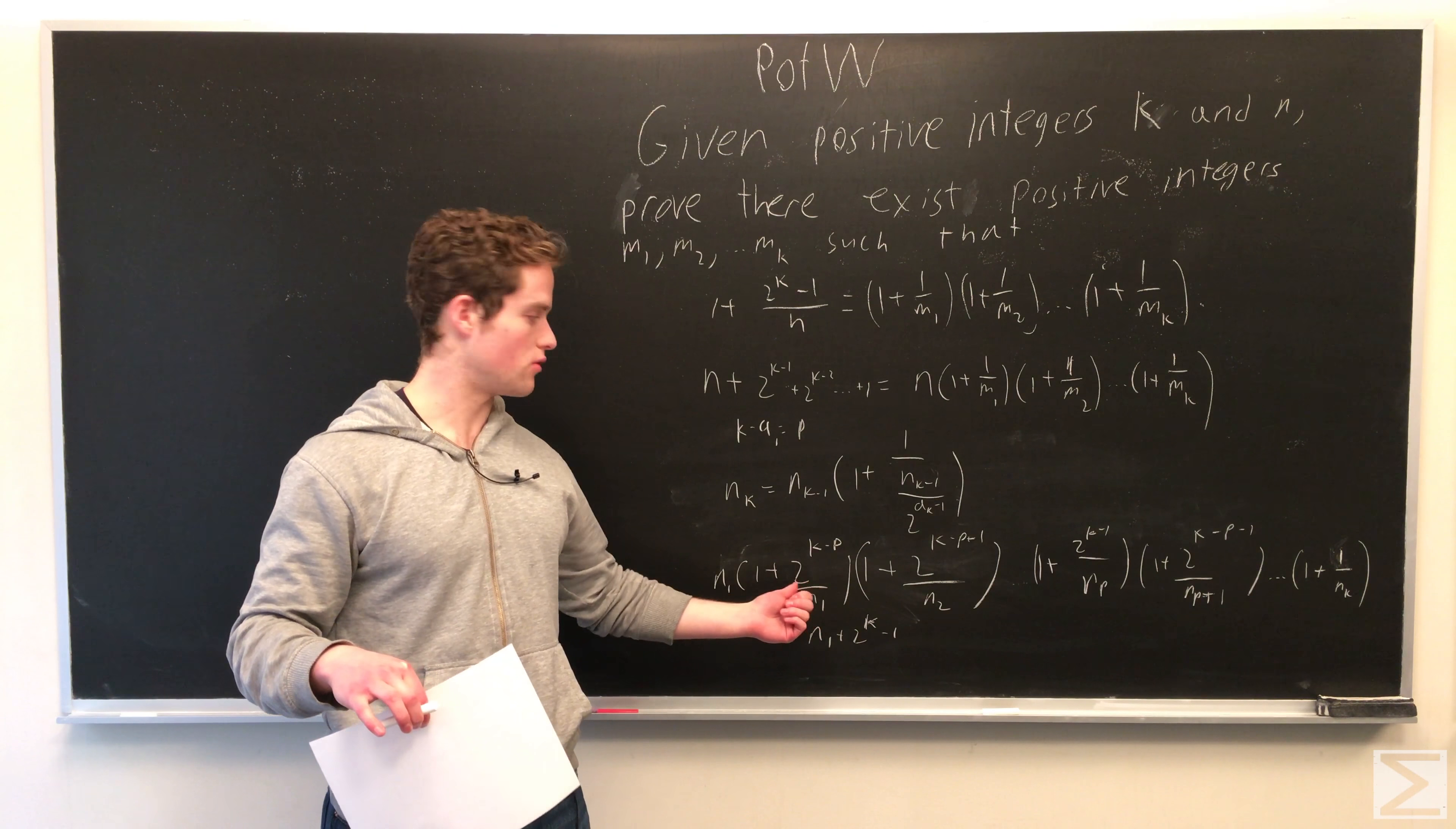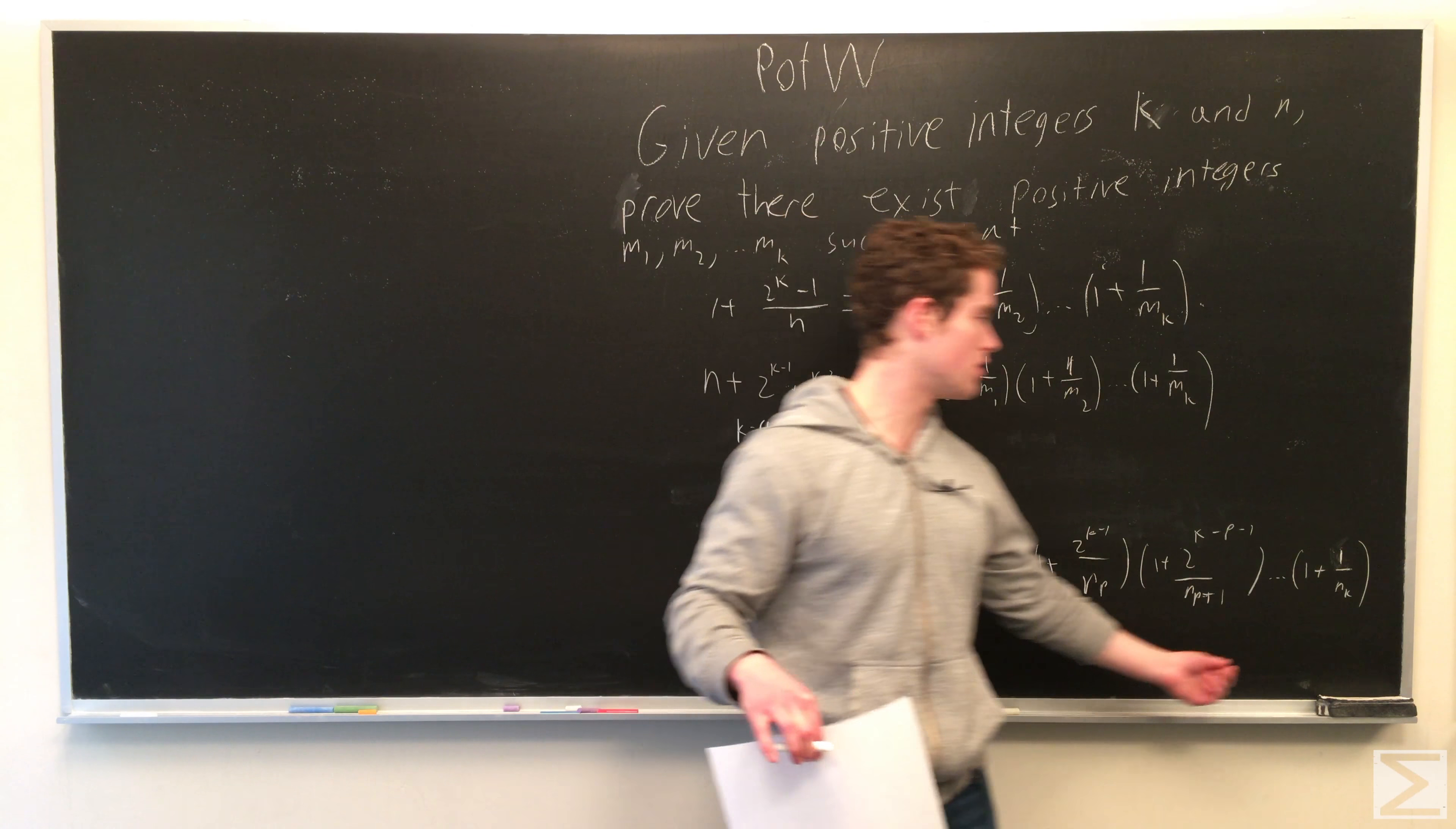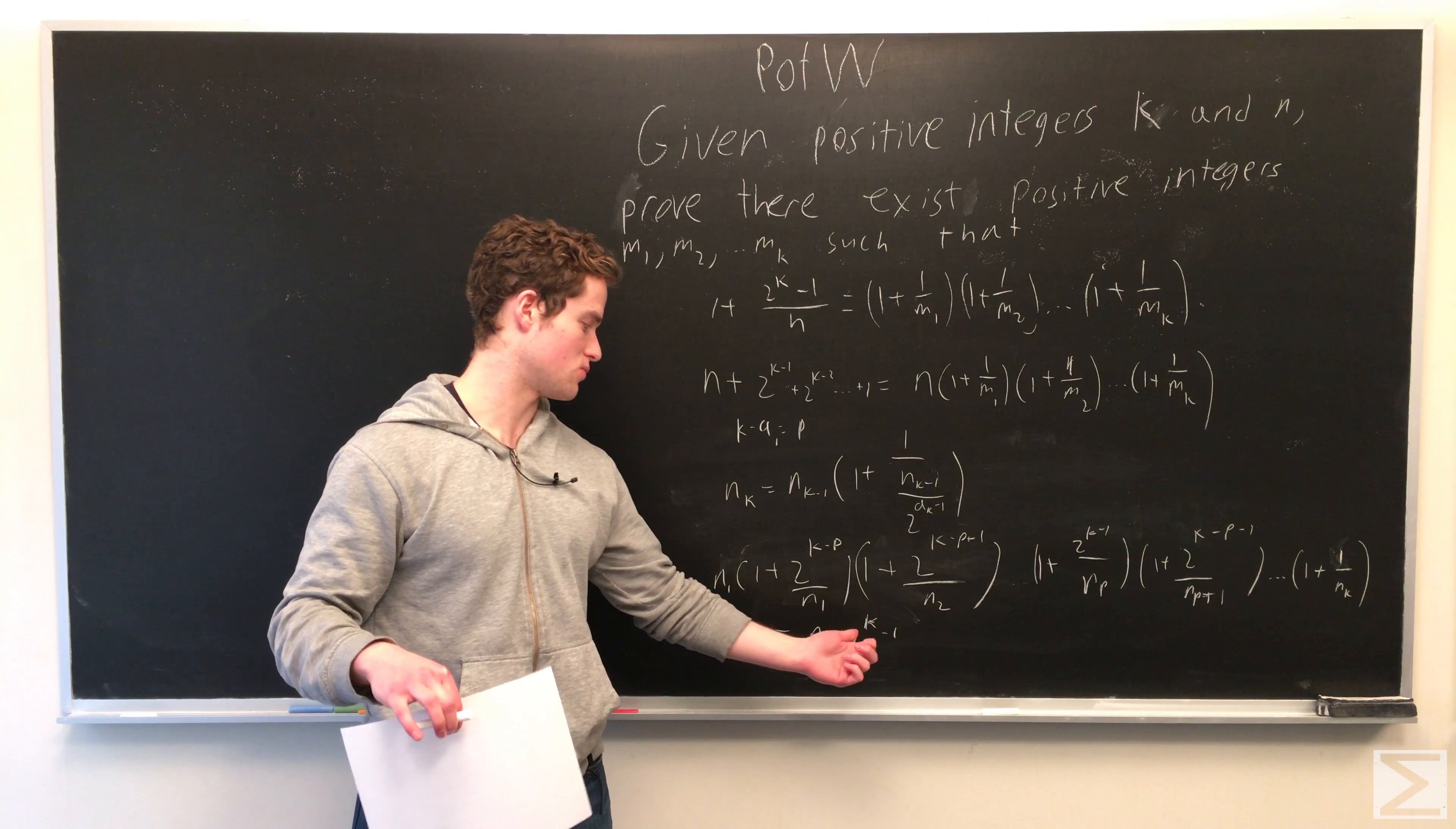So this will add 2 to the k minus p, 2 to the k minus p plus 1. This will add 2 to the k minus 1. And then we start going down. So we need 2 to the k minus p minus 1, and then we go all the way down to 1. And so this adds all the powers of 2 from 2 to the k minus 1 down to 1. And this sum is equal to 2 to the k minus 1.